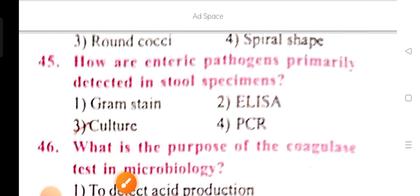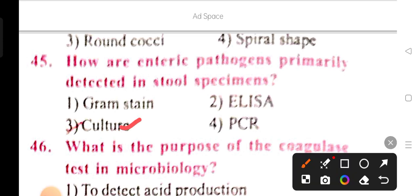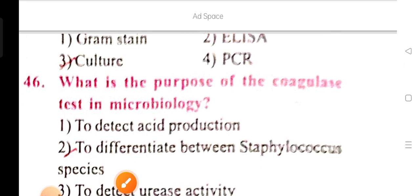How are enteric pathogens primarily detected in stool specimens? In the stool specimens, how are enteric pathogens primarily detected? The options are gram stain, ELISA, culture, and PCR. Option 3 is the correct answer: culture.